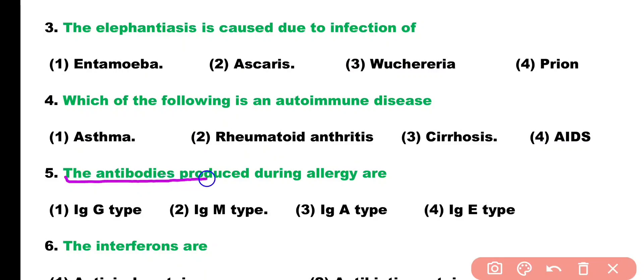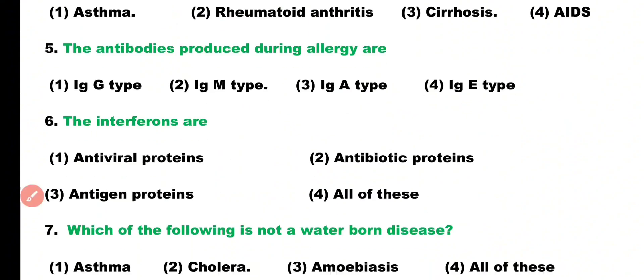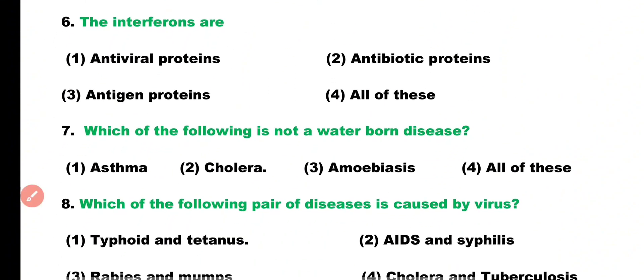Question number five: the antibodies that are produced during allergy are of which type? Options: IgG type, IgM type, IgA type, IgE type. Correct answer is option four — IgE type of antibodies are produced during allergic reaction.